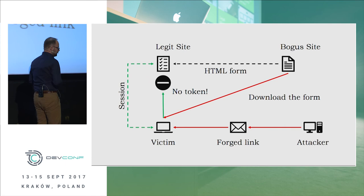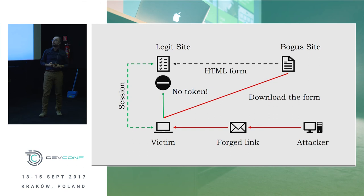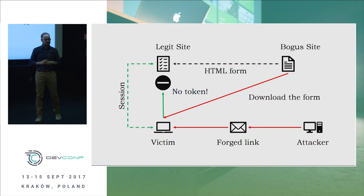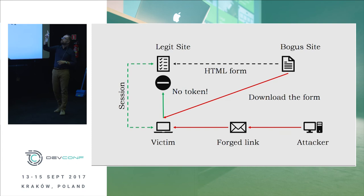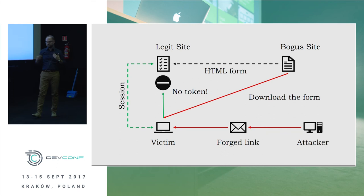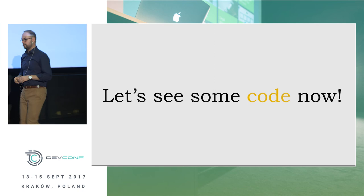Back in the attack scenario with token protection, the authentication cookie is still transmitted and the request is still authenticated, but the protection comes from the fact that there's no token in the request's form data. The form on the bogus site has no way of knowing the secret token, so the website can easily detect that the token is missing and reject the request.